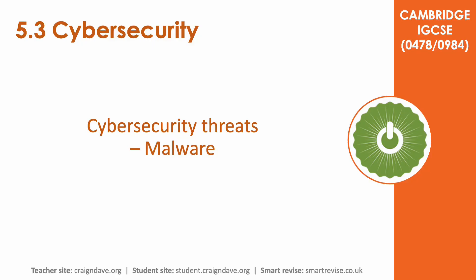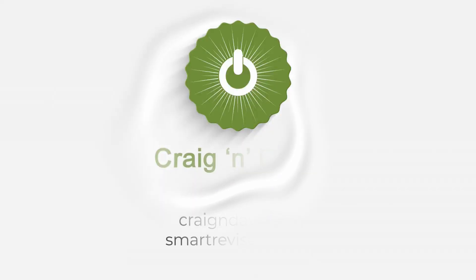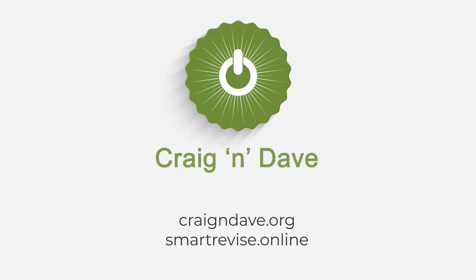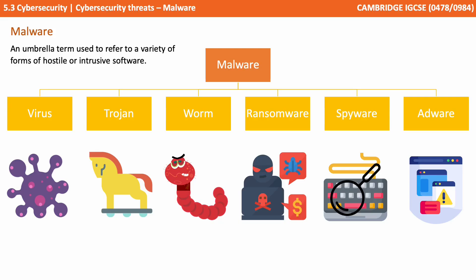In this video we look at the cyber security threat of malware in a bit more detail. Malware is an umbrella term used to refer to a variety of forms of hostile or intrusive software. There are many different types. The ones listed in your syllabus are Virus, Trojans, Worms, Ransomware, Spyware and Adware. We'll go through each of those now.